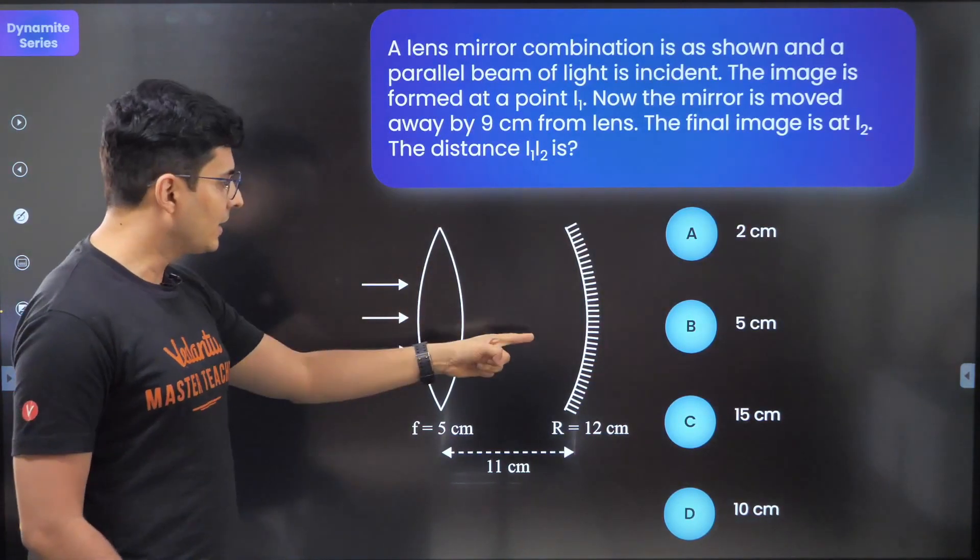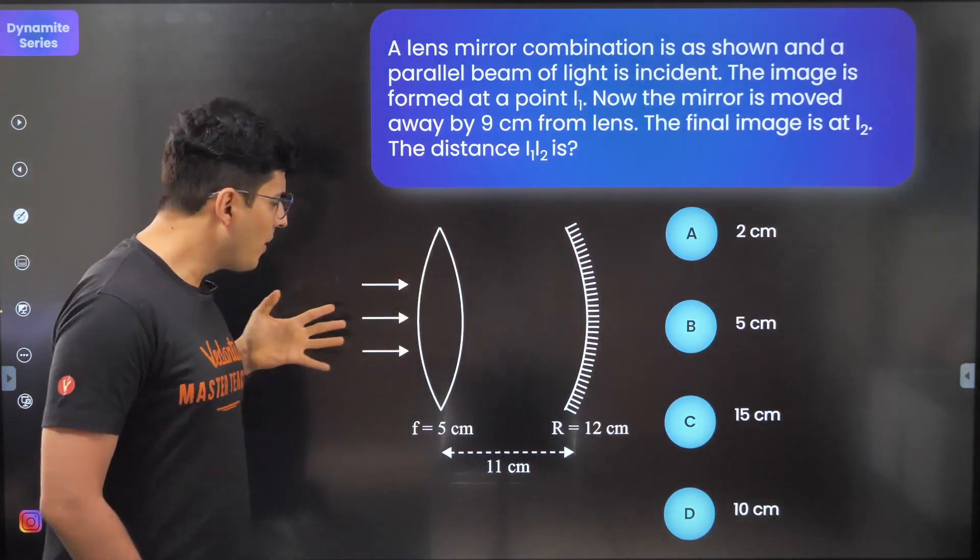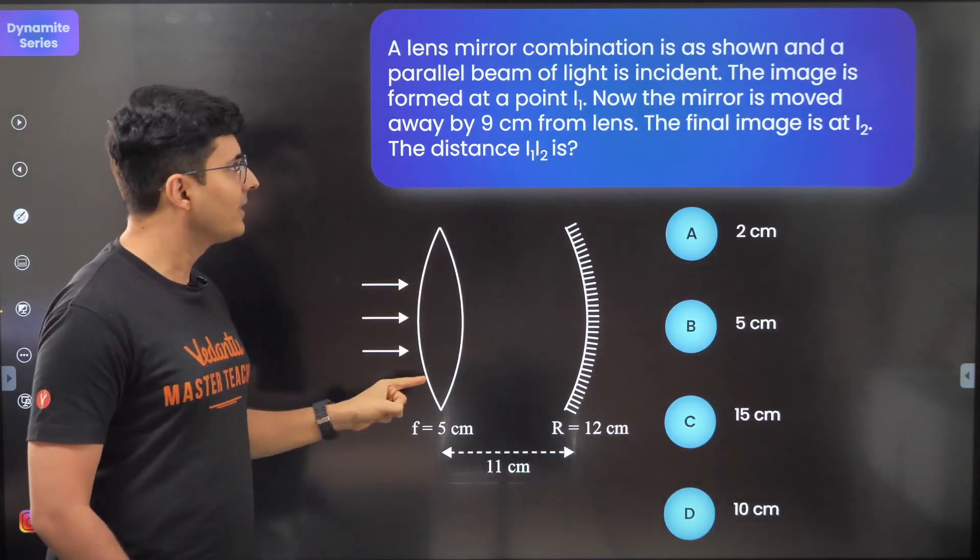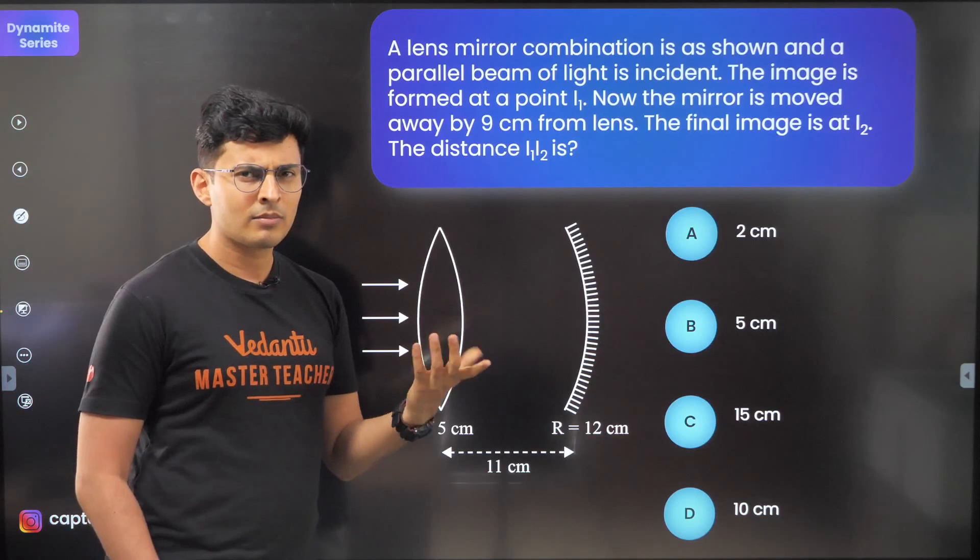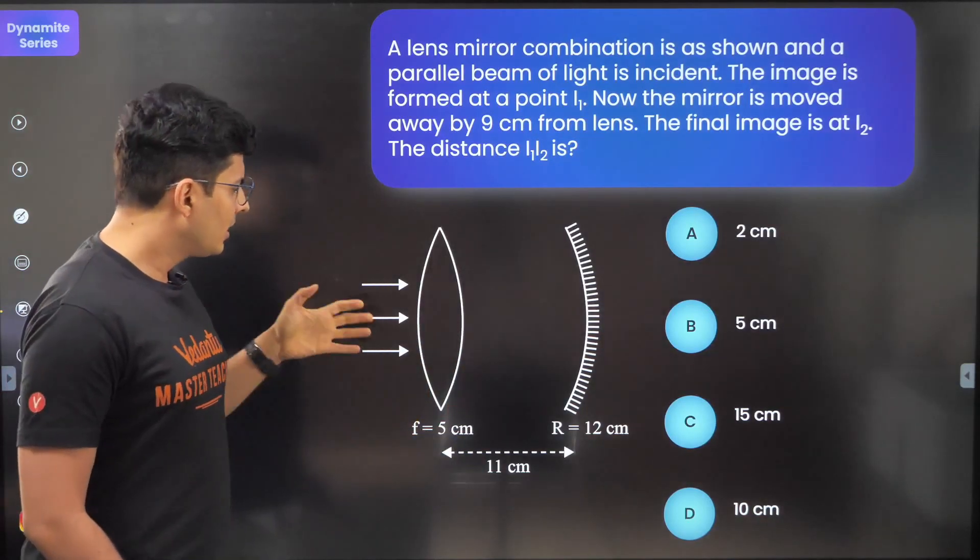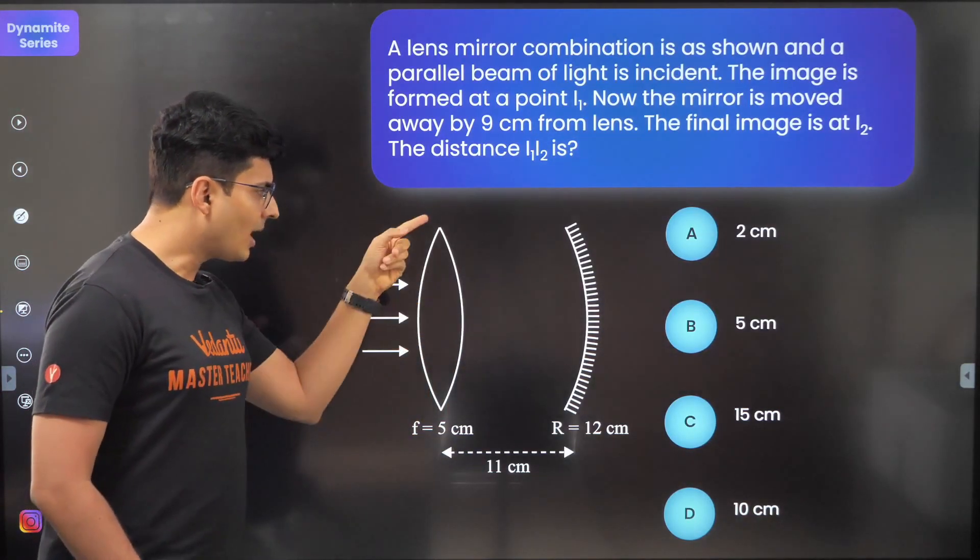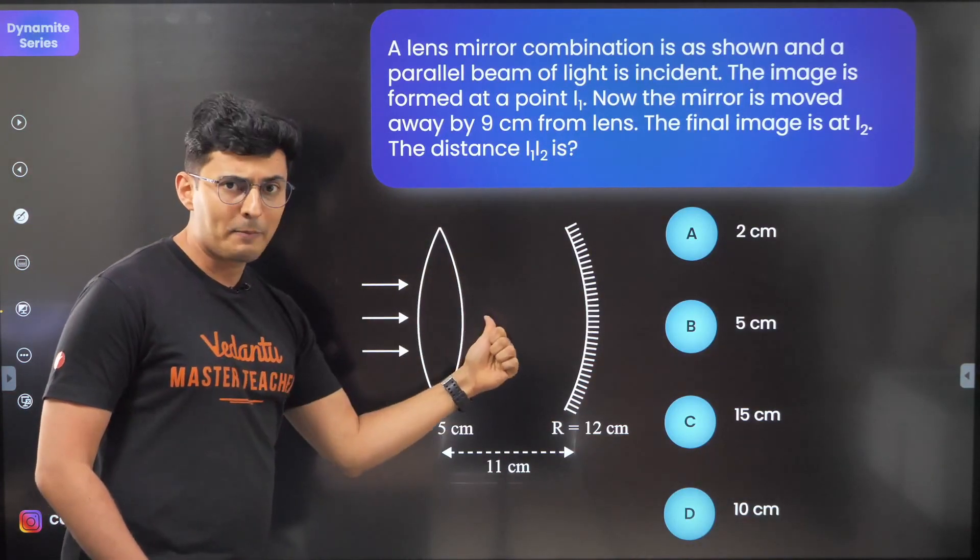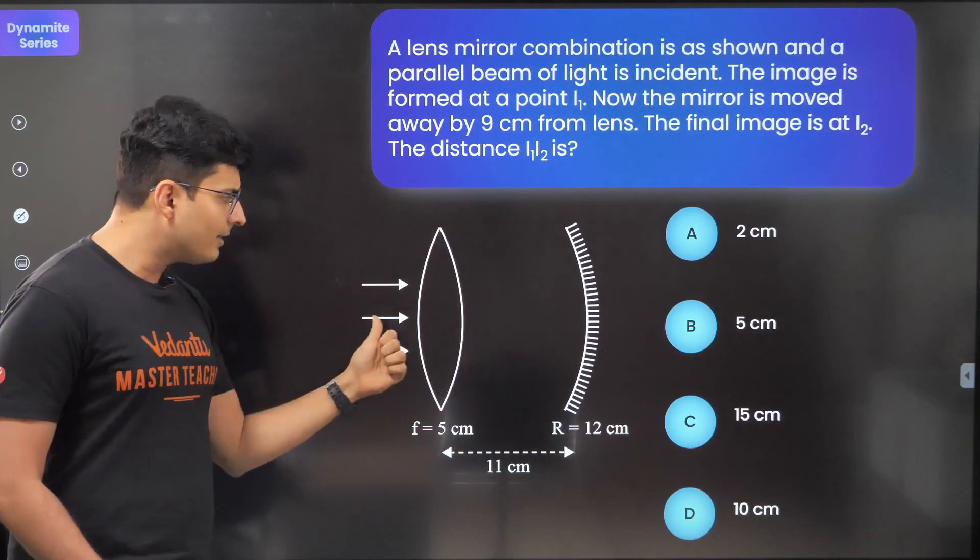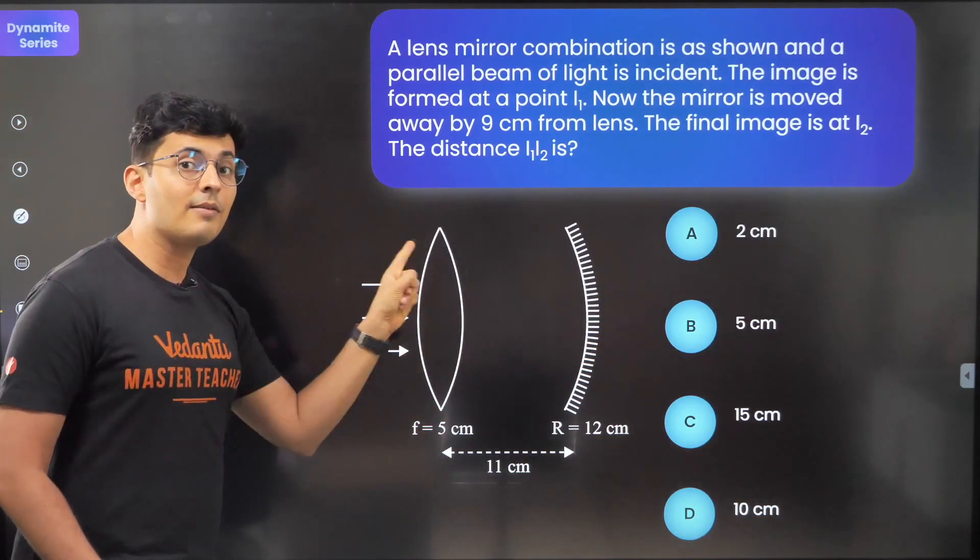Today's question is a lens and mirror combination. You have a parallel beam of light which is incident on this lens, and then the final image is formed at I1. These rays after the lens refract, then reflect from the mirror, and when they're coming back they will again refract at the lens.